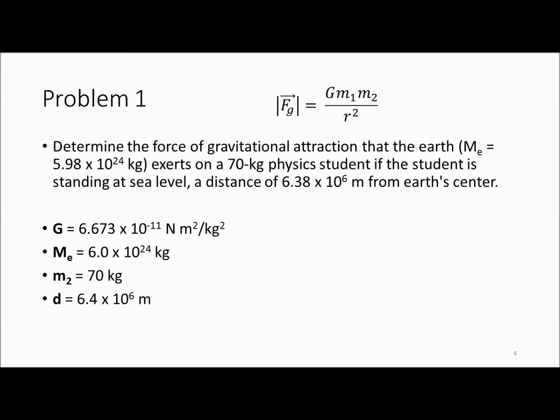So let's determine the force of gravitational attraction that the earth, which has a mass of 5.98 times 10 to the 24th kilograms, exerts on a 70 kilogram physics student. If the student is standing at sea level, which is a distance of 6.38 times 10 to the 6th meters from the earth's center, we're going to use the equation. And these are our givens. Let's plug them in and see what the force of gravity is.